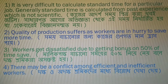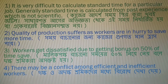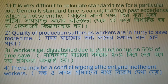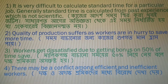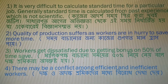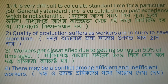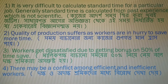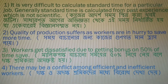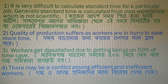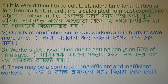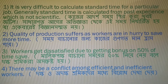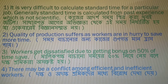The last disadvantage is that there may be a conflict between efficient and inefficient workers. As we saw in the advantages, efficient workers get more bonus while inefficient workers get less. This creates some conflict between efficient and inefficient workers. So that covers the complete Halsey system, where you need to solve numerical problems as well as study its advantages and disadvantages. Thank you.